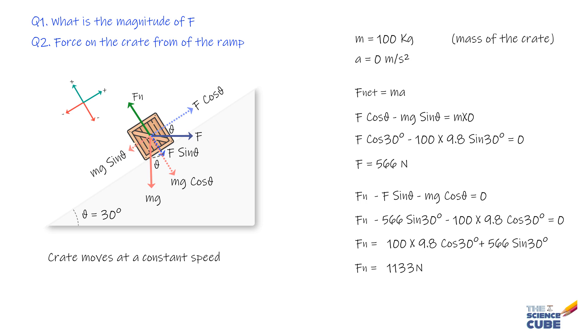The key takeaway is that we first need to resolve all forces in the x and y planes, then use Newton's second law of motion to find net force along each plane, and equate it with the product of mass and acceleration in the respective plane, keeping the sign notation in mind.